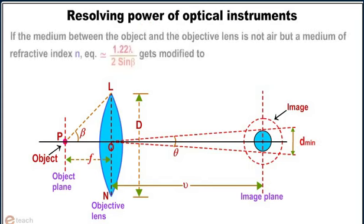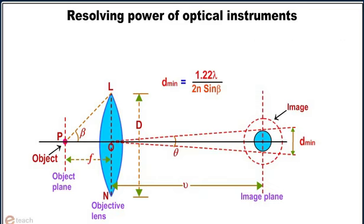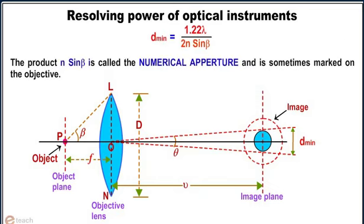If the medium between the object and the objective lens is not air but a medium of refractive index n, then the equation 1.22 lambda by 2 sin beta gets modified to d minimum equals 1.22 lambda by 2 n sin beta. The product n sin beta is called the numerical aperture and is sometimes marked on the objective.